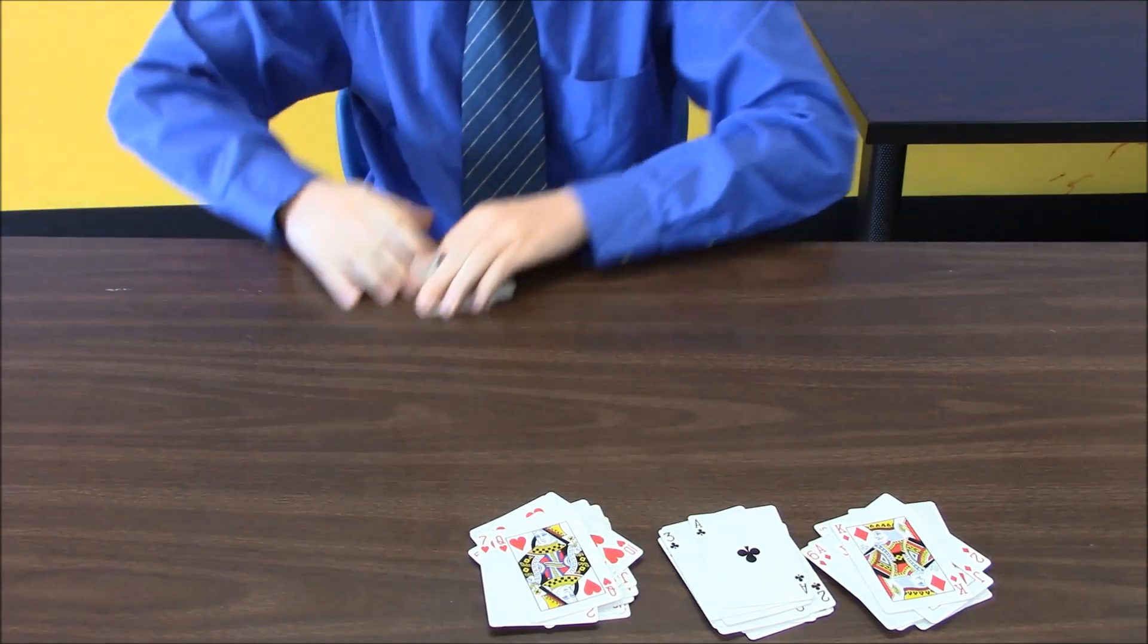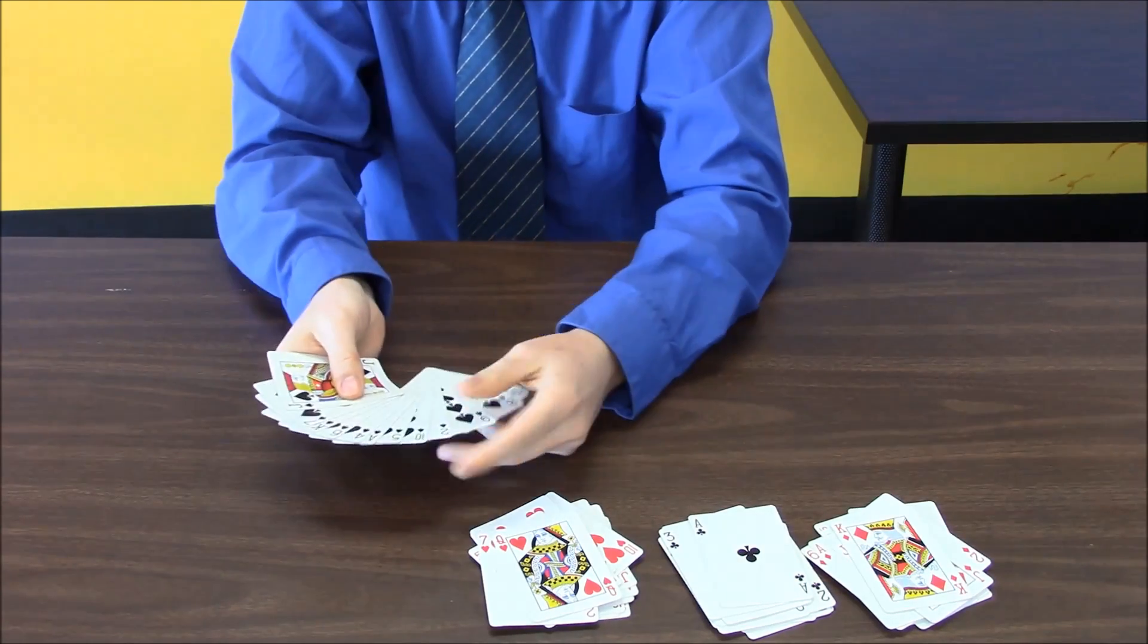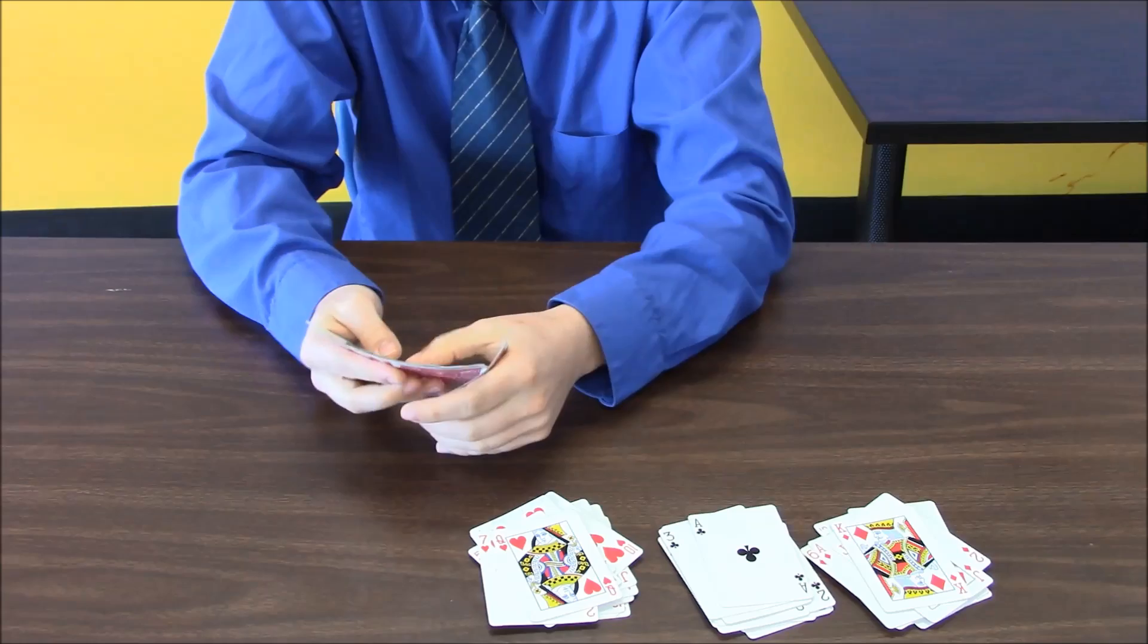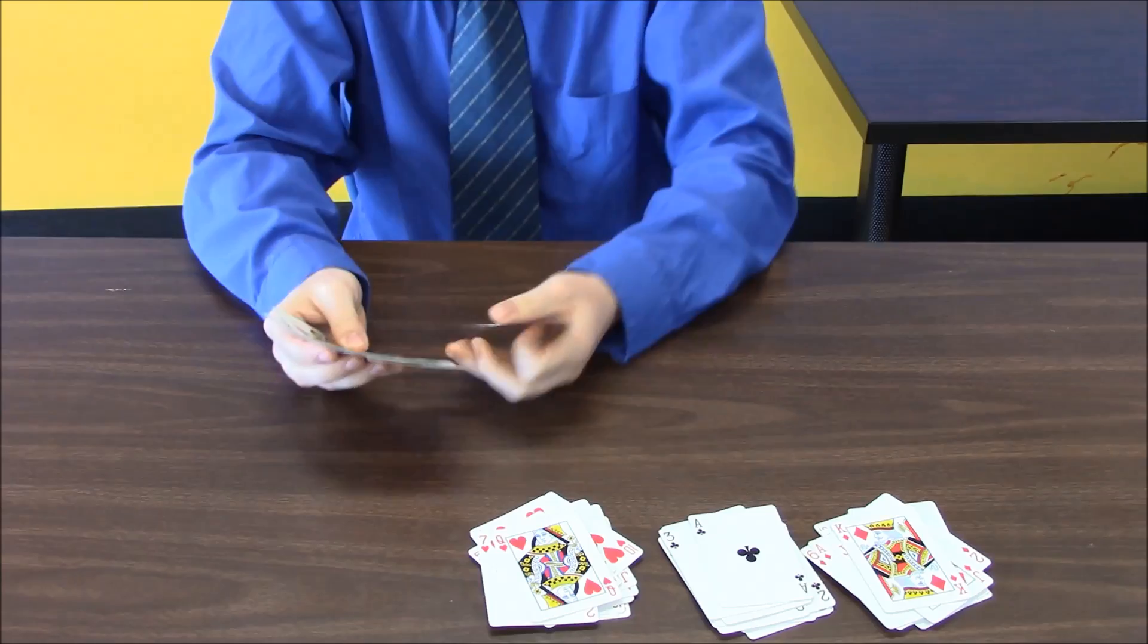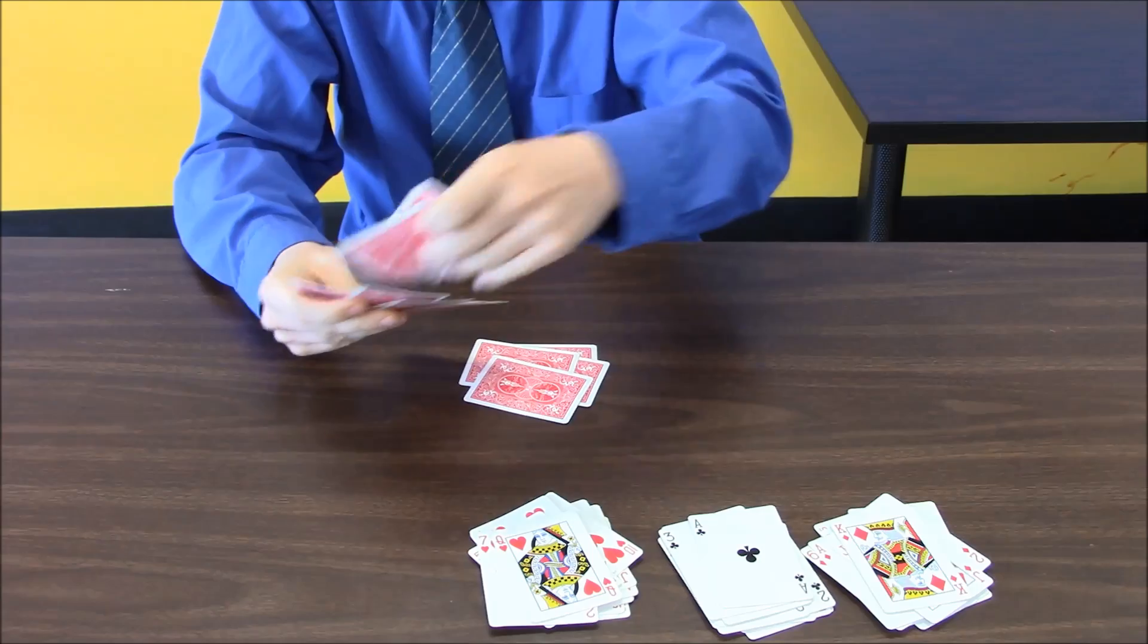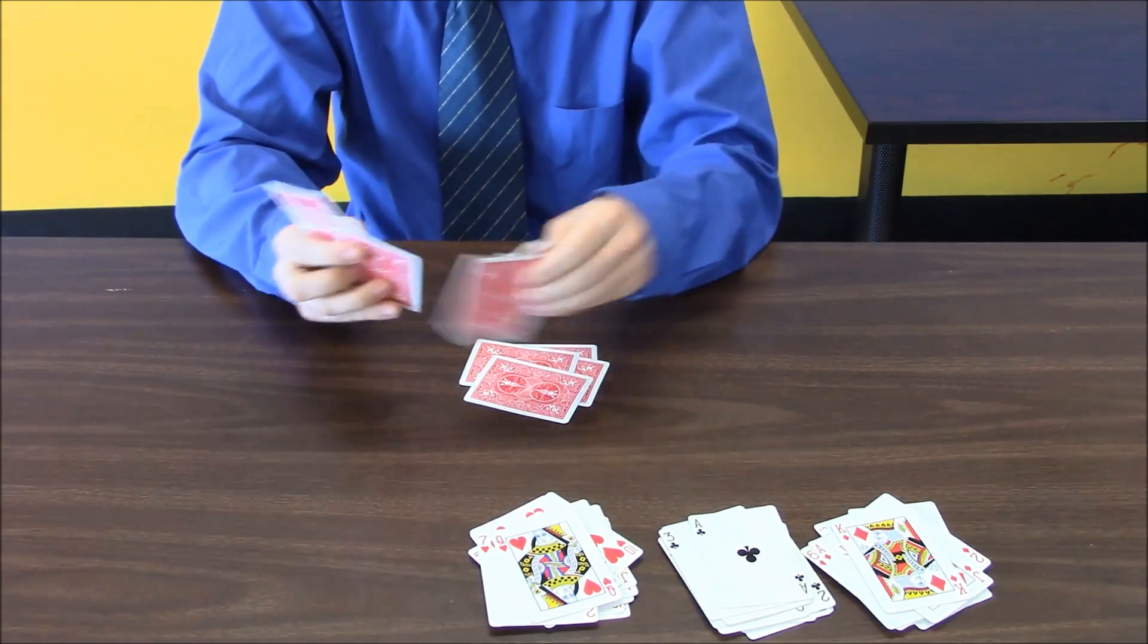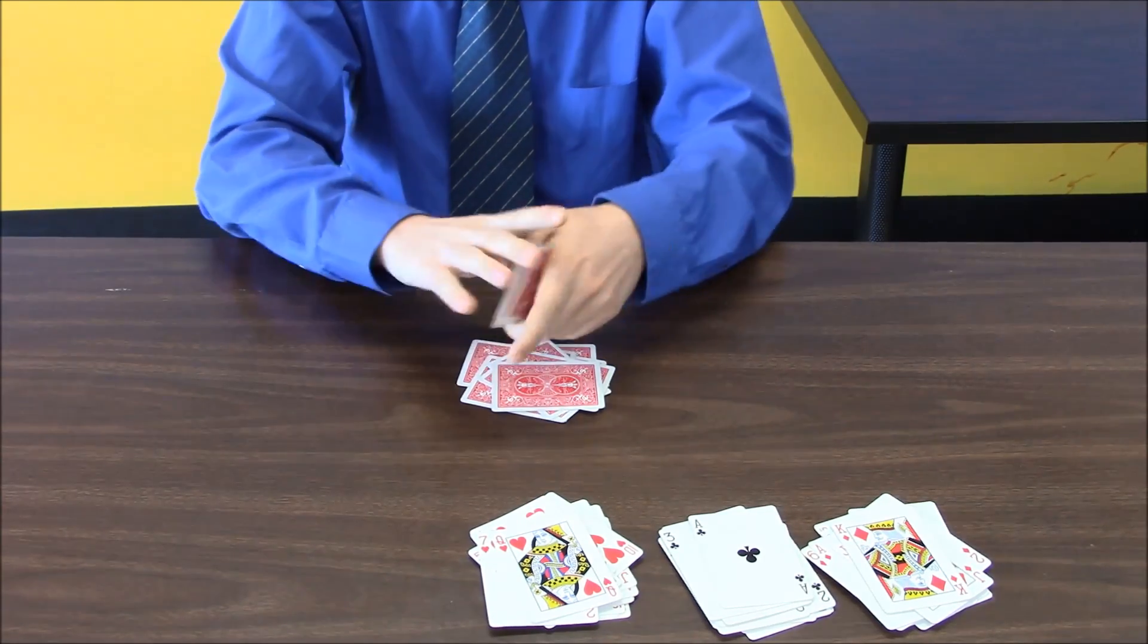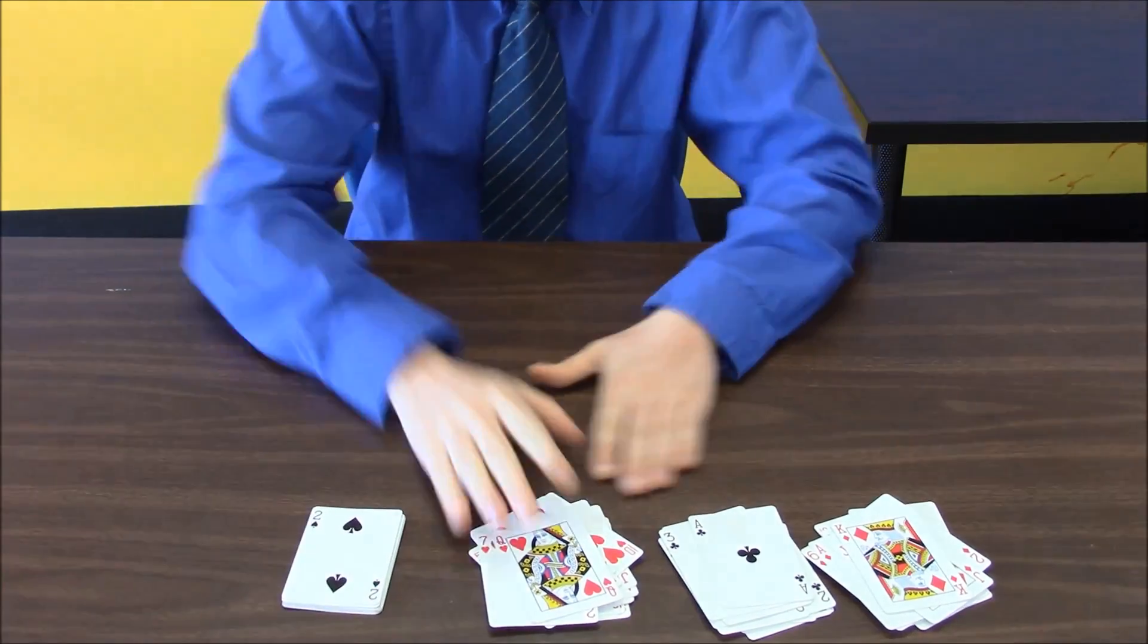I'll look at each stack and order them from two through ace. So starting with two, three, four, five, six, seven, eight, nine, ten, jack, queen, king, ace.